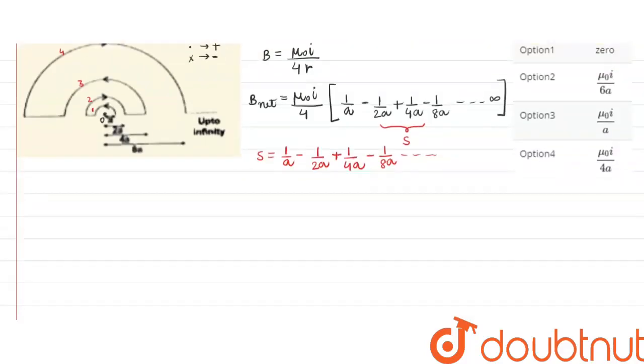Here we can clearly see that the common ratio of this series is r = -1/2, as the sign is changing, and the first term a₁ = 1/a.